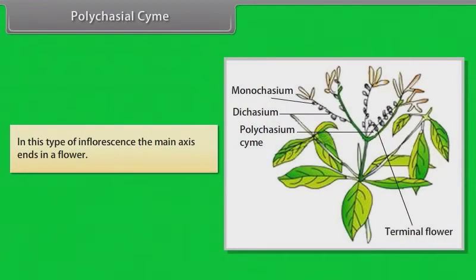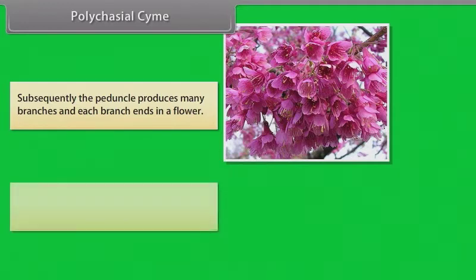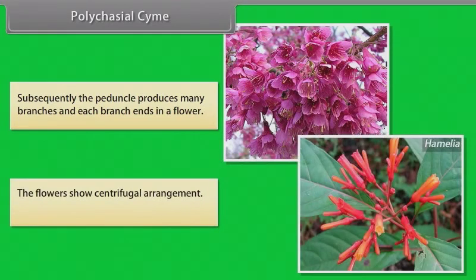In polychasial cyme, the main axis ends in a flower; subsequently the peduncle produces many branches and each branch ends in a flower. The flowers show centrifugal arrangement. Example: Hamelia.